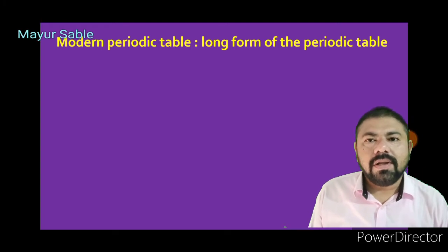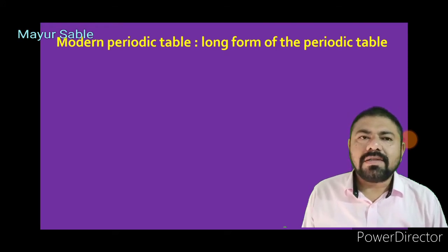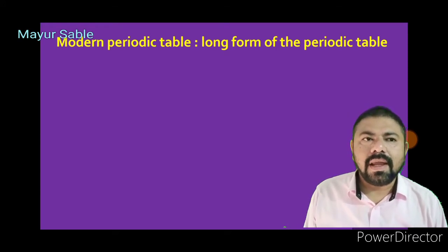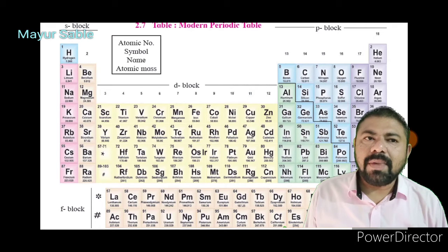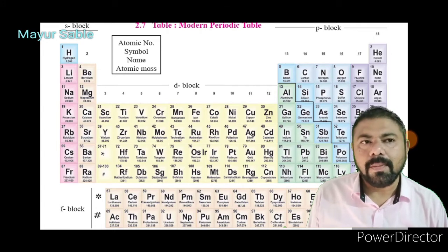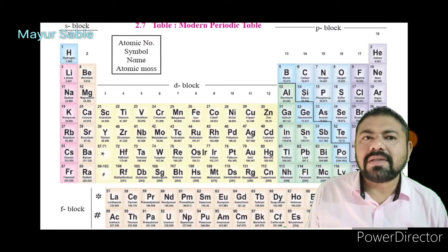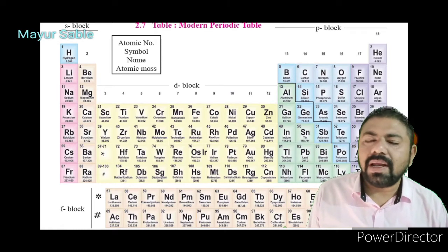The modern periodic table is also called the long form of the periodic table. The classification of elements results from arranging elements in increasing order of their atomic number. The properties of elements can be predicted more accurately on the basis of atomic numbers, and most of the drawbacks of Mendeleev's periodic table were removed in the modern periodic table.